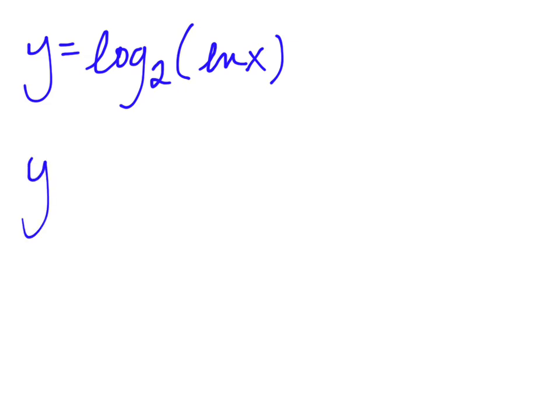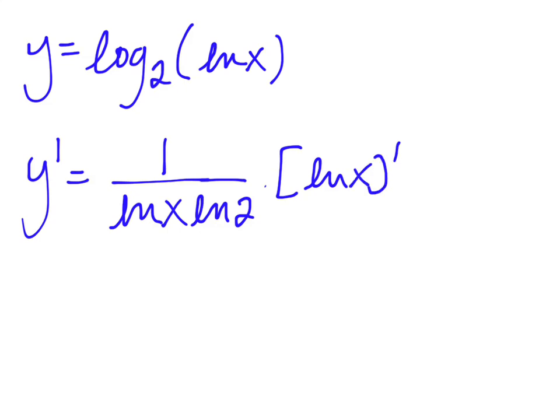It looks like y prime equals 1 over u, so ln of x times ln of 2 times the derivative of u, which is derivative of ln of x. The derivative of ln of x is 1 over x, so it's 1 over ln of x times ln of 2 times x, just like that. I'll put these in brackets just to make it look a little bit tidier. And there's our derivative.